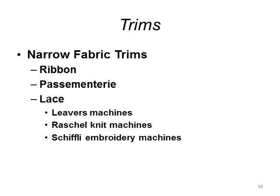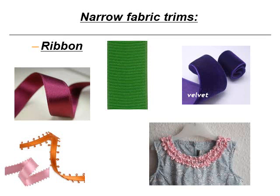Within lace we'll cover the Levers machine, the Raschel knit machines, and the Schiffli embroidery machines. Ribbon is used quite a bit in ready-to-wear apparel. There are several types: satin ribbon, grosgrain ribbon with its ribbed texture, velvet ribbon, picot edge ribbon, and ruchine ribbon, which is pre-gathered. These trims are really popular in children's apparel.